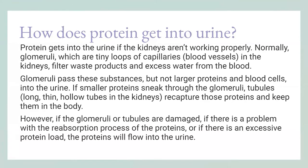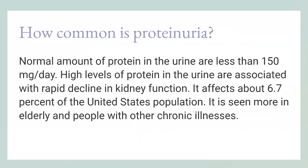Normal amounts of protein in the urine are less than 150 milligrams a day. High levels of protein in the urine are associated with rapid decline in kidney function. About 6.7 percent of the United States population is affected. With a U.S. population of over 300 to 370 million people, that represents a very large number of individuals affected by this condition.